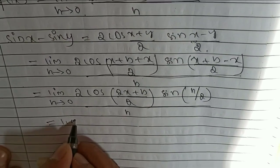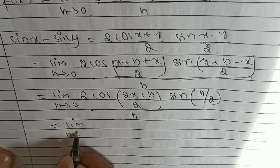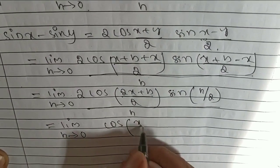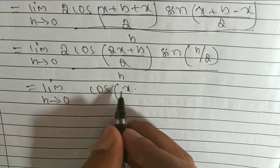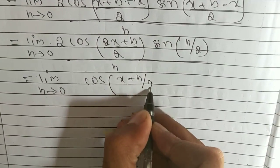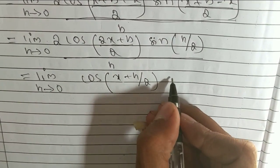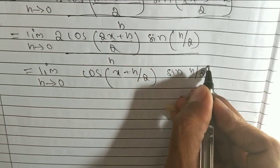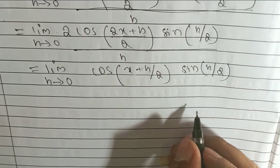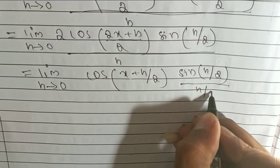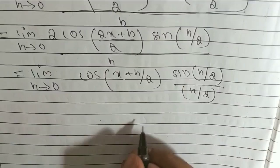Equal to limit h tending to 0. It is equal to 2 cos, I will bring 2 down, that is sin of h by 2 by h by 2.